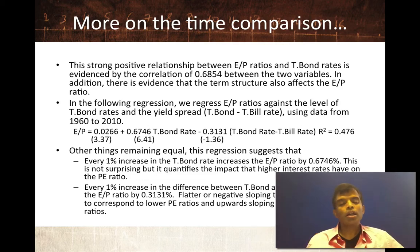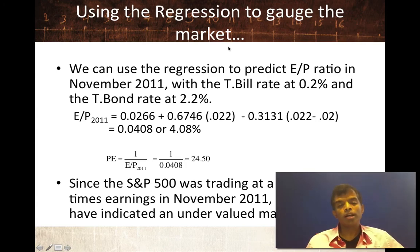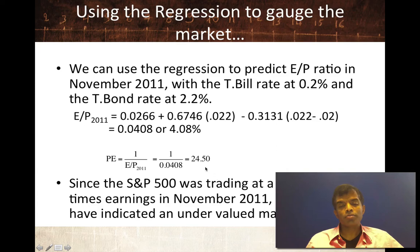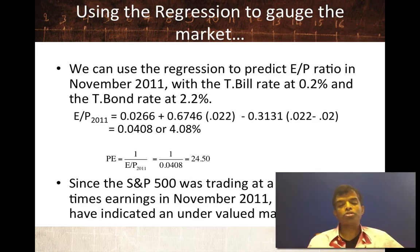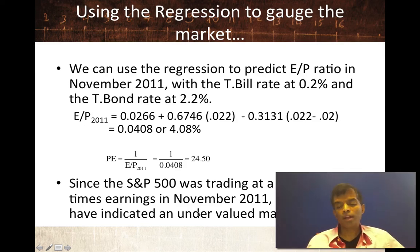To use this for market timing: plug in the level of T-bond and T-bill rates for November 2011 — the T-bill rate was 0.2% and the T-bond rate was 2.2%. Plugged into the regression, I get a predicted earnings-to-price ratio of about 4.08%, which inverts to a price-earnings ratio of 24.50. Relative to how the S&P 500 has been priced over time given interest rates in 2011, the P/E should be 24.5, but it was actually trading at 15 times earnings. To the degree that I trust my relative valuation, stocks are undervalued. This is a more sophisticated version of comparing P/E ratios over time because it brings in fundamentals.